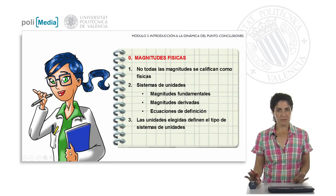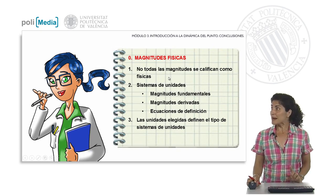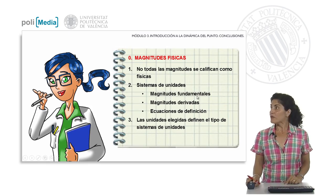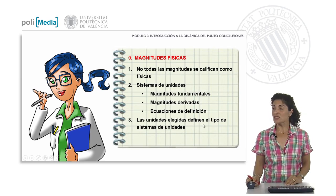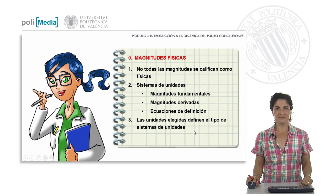Summarizing to conclude this first presentation: not all quantities can be classified as physical quantities. For a system of units to be well defined, we need to define which are the fundamental magnitudes — the rest will be derived — and which are the defining equations. The different units chosen will determine the different types of system of units in which we are going to work. We will continue in the next class. Thank you very much.